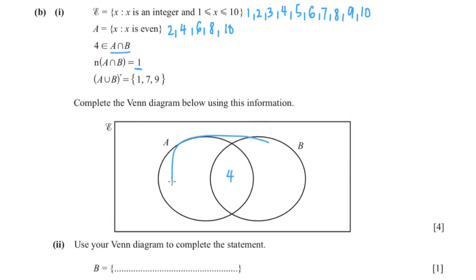Now A union B here. Now they said that 7 and 9 are not A union B. So we'll just write it outside. And now we can just complete the diagram.